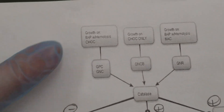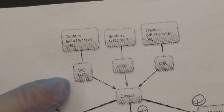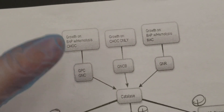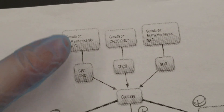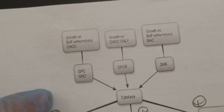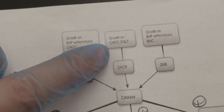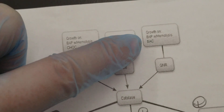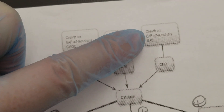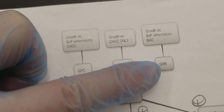The first thing we look at is what did they grow on in the primary setup and what is the gram stain. If we have organisms that grew on blood and chocolate, we're thinking gram positive and gram negative cocci. When we're looking at chocolate only, that's when we're thinking Haemophilus. When we look at growth on blood with hemolysis and on MAC, that's the gram negative rods — like E. coli and the rest of Enterobacteriaceae.